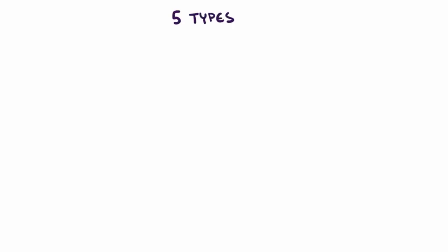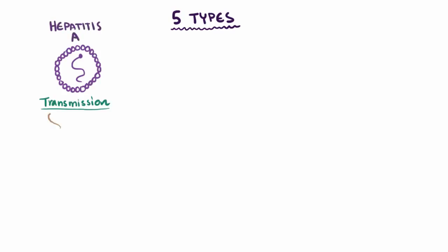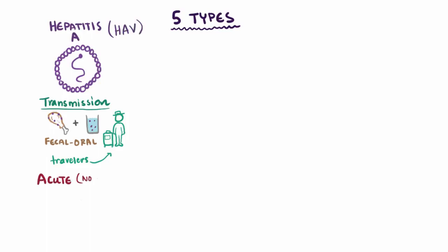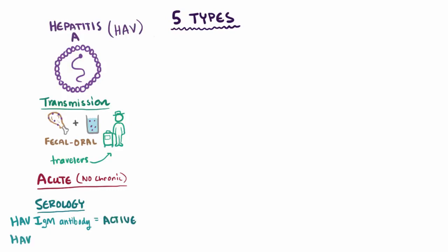There are five known types of hepatitis virus with slightly different and unique properties. Hepatitis A is transmitted through ingestion of contaminated food or water — the fecal-oral route — and is known to be acquired by travelers. Hepatitis A virus (HAV) is almost always acute with essentially no chronic HAV. An HAV-IgM antibody indicates active infection, whereas an HAV-IgG antibody is a protective antibody indicating recovery from HAV or past vaccination.